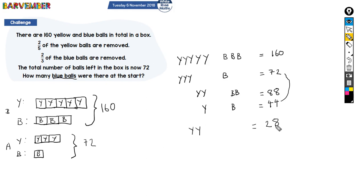So I now know that two Y's are 28, so one Y, which is half that, must be 14. So hooray, I've now managed to work out what one of the values is: Y equals 14.